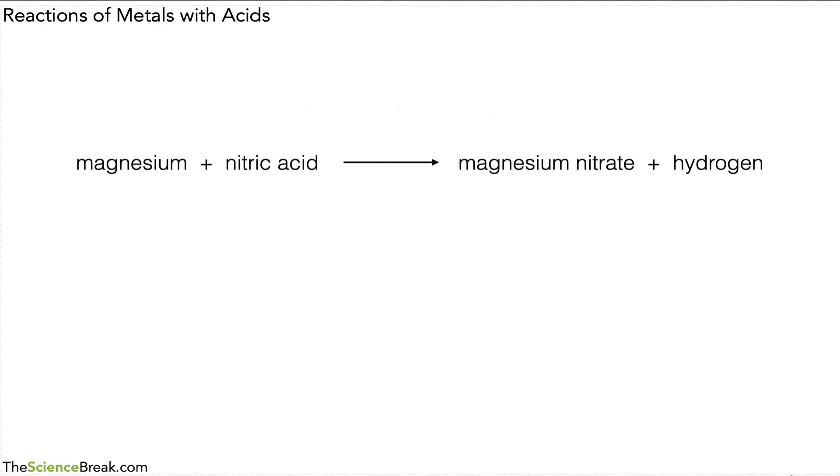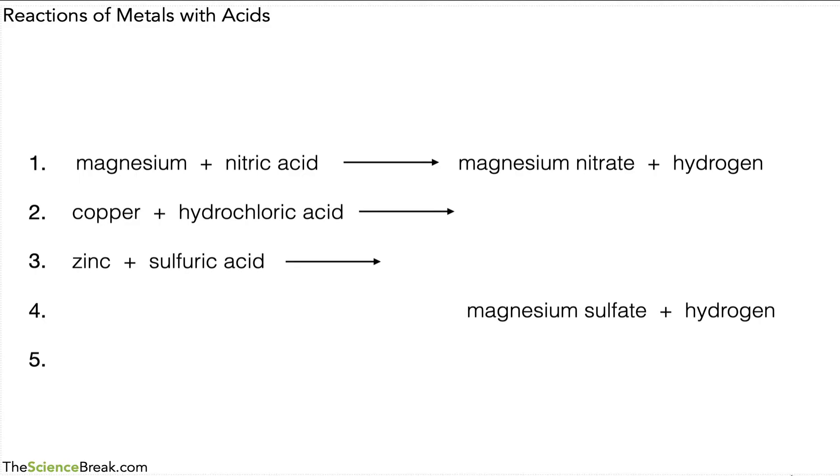Now let's get rid of the general equation as well and have a look at a few different examples. So we've got copper plus hydrochloric acid, zinc plus sulfuric acid, and for the last two we've got the products but not the two things that are reacting, so you've got to work backwards from the products. So again, pause here, give that a go, and we'll go through the answers in a moment.